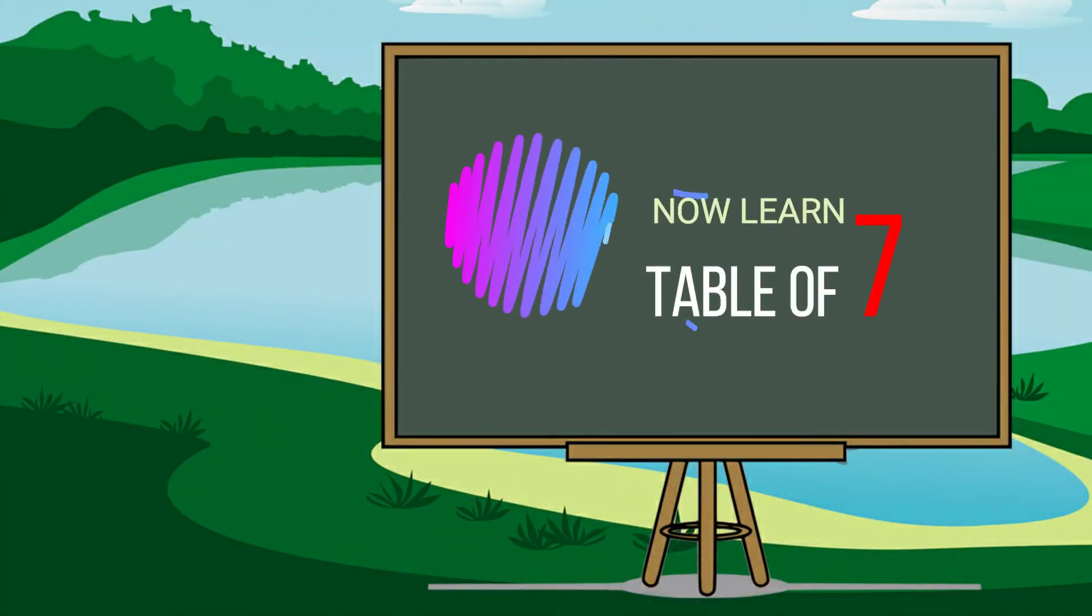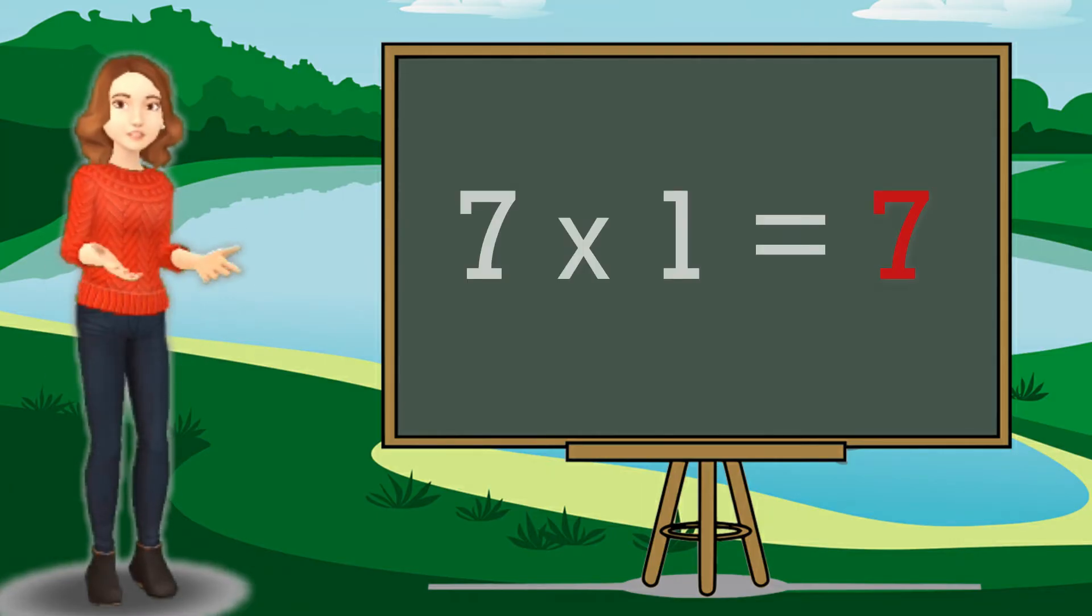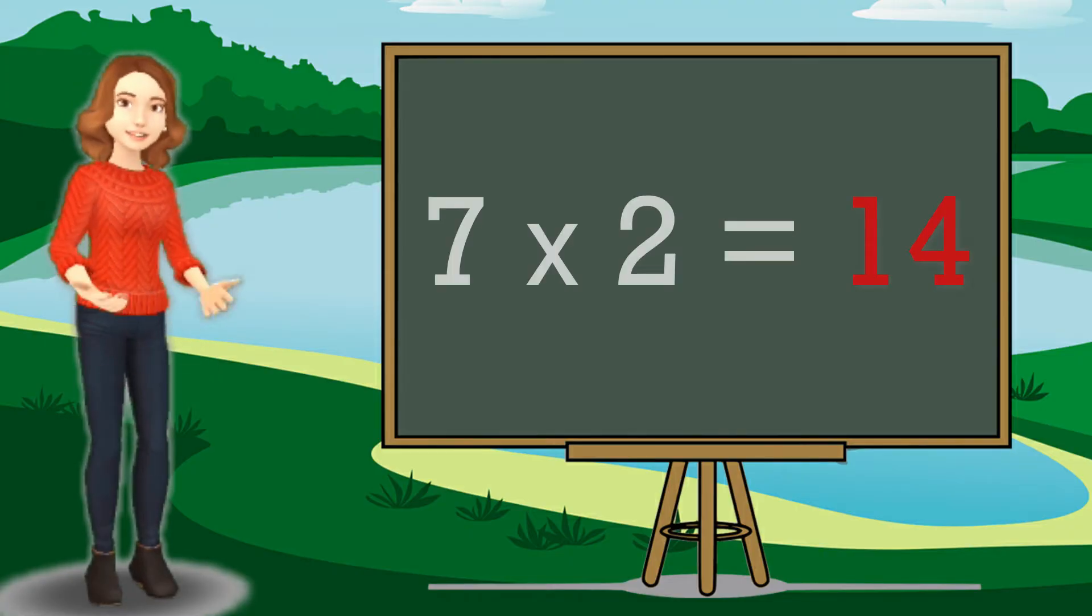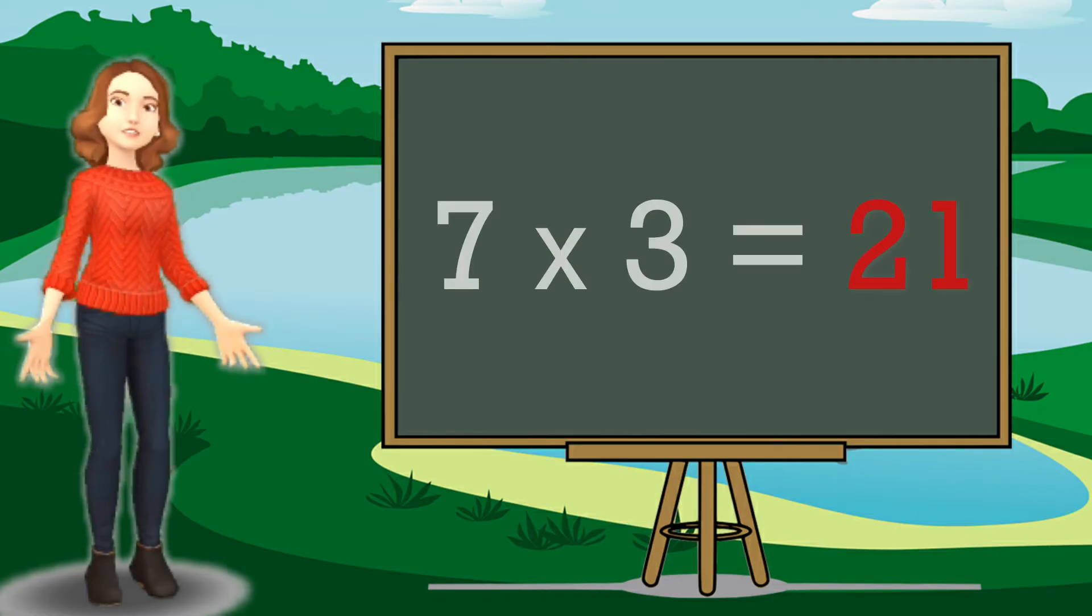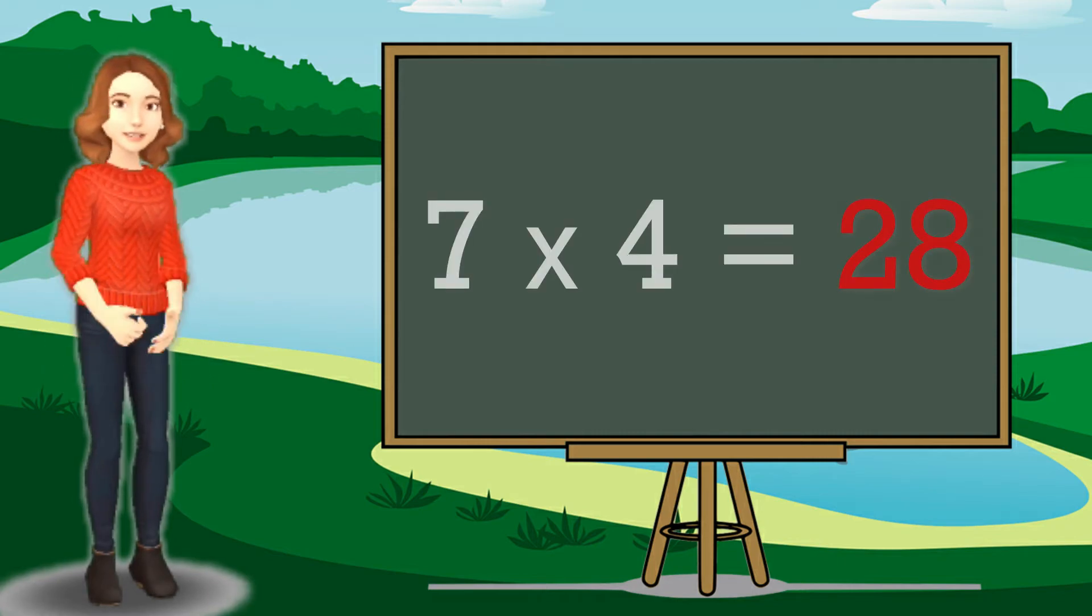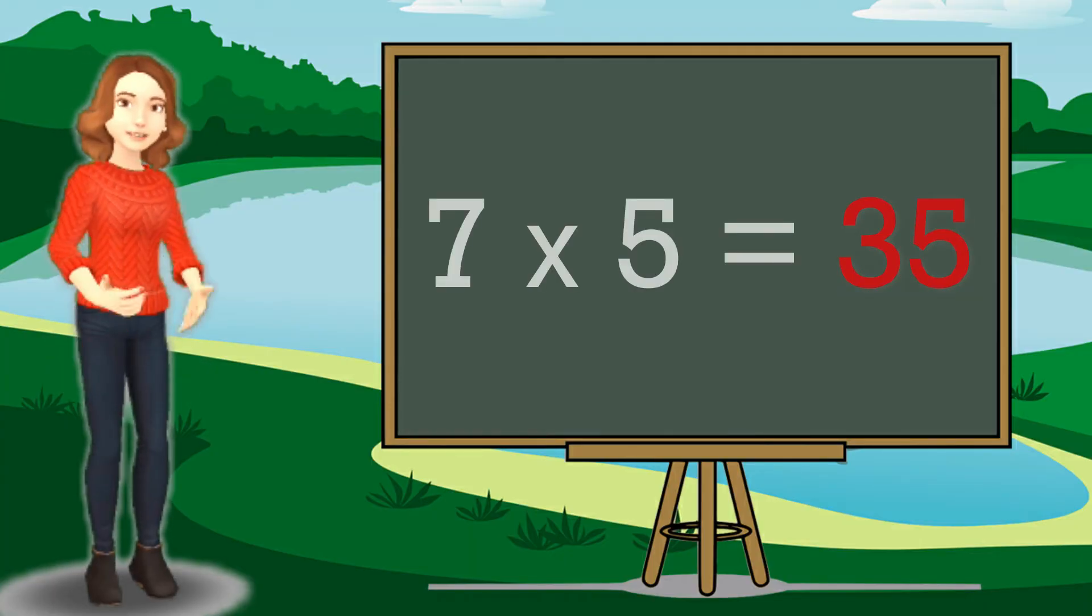Now learn table of 7. 7 ones are 7. 7 twos are 14. 7 threes are 21. 7 fours are 28. 7 fives are 35.